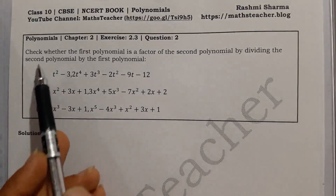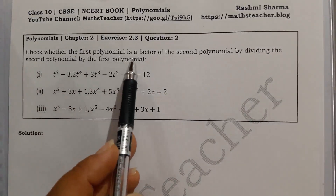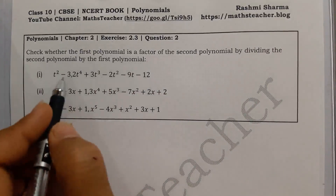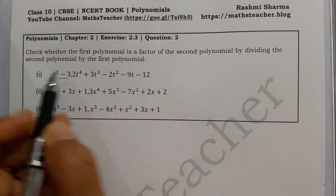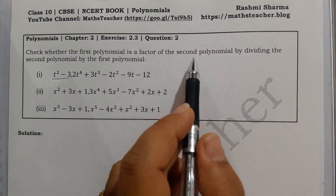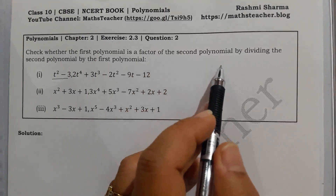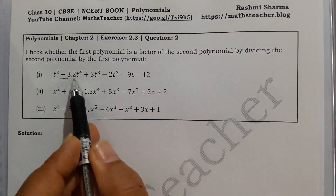The question is: check whether the first polynomial is a factor of the second polynomial. Here we have a comma in the middle — this is the first polynomial and this is our second polynomial.